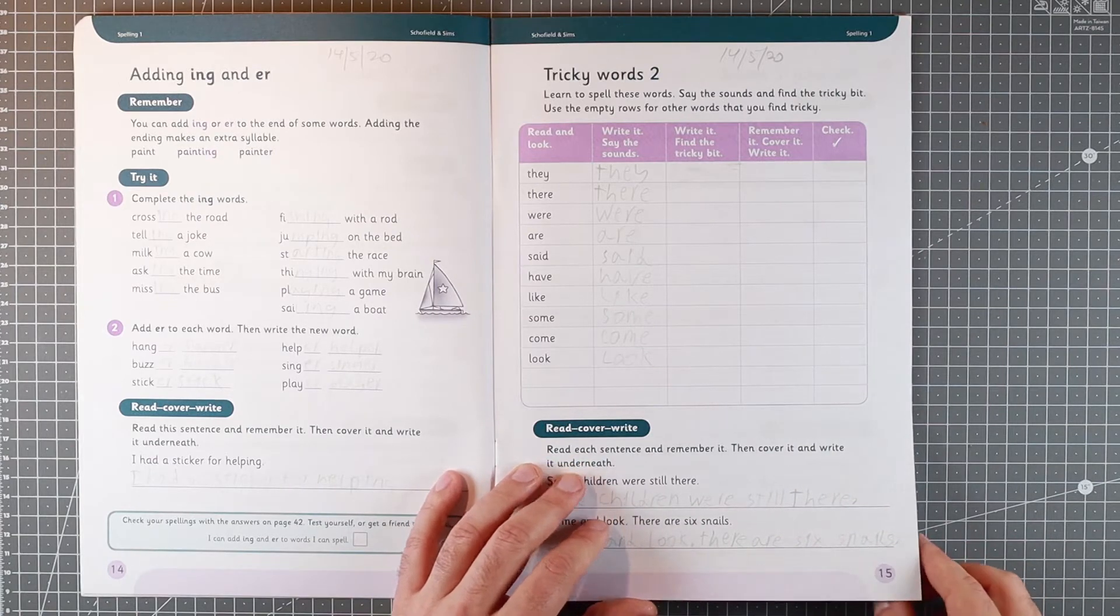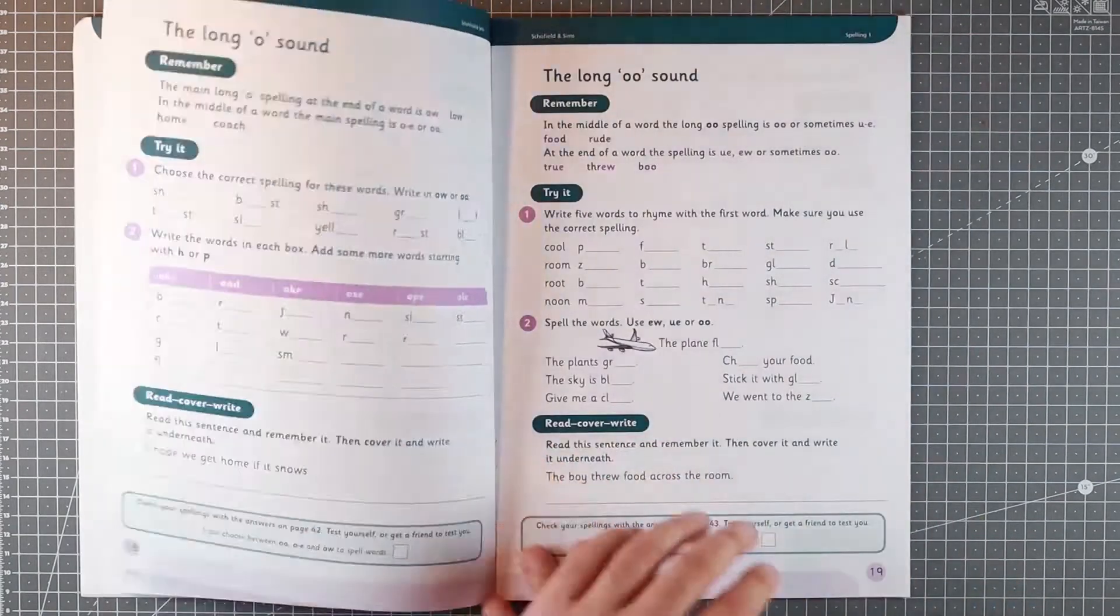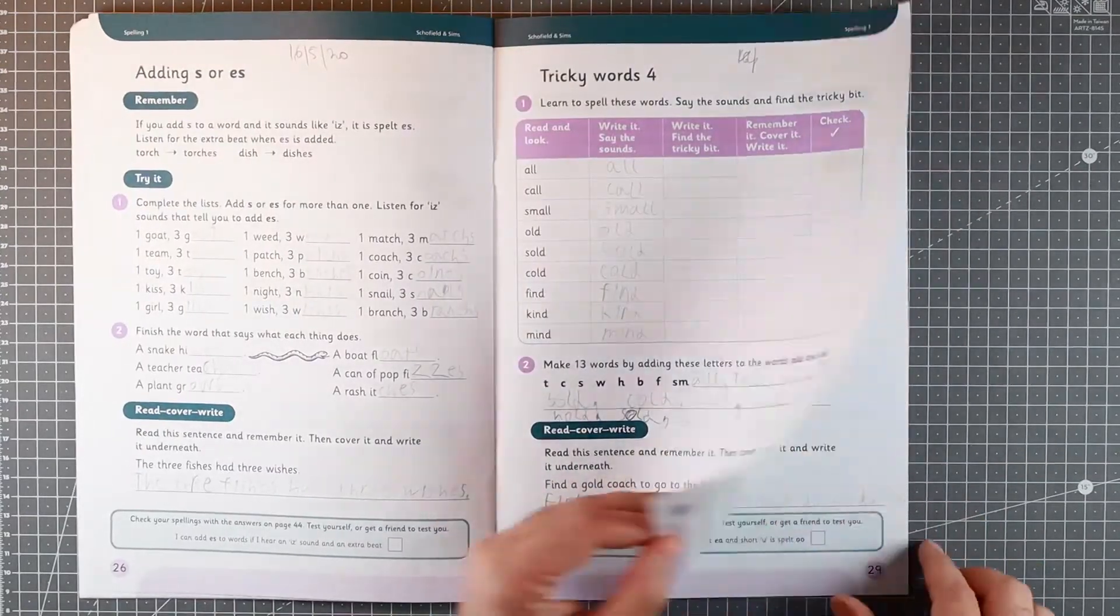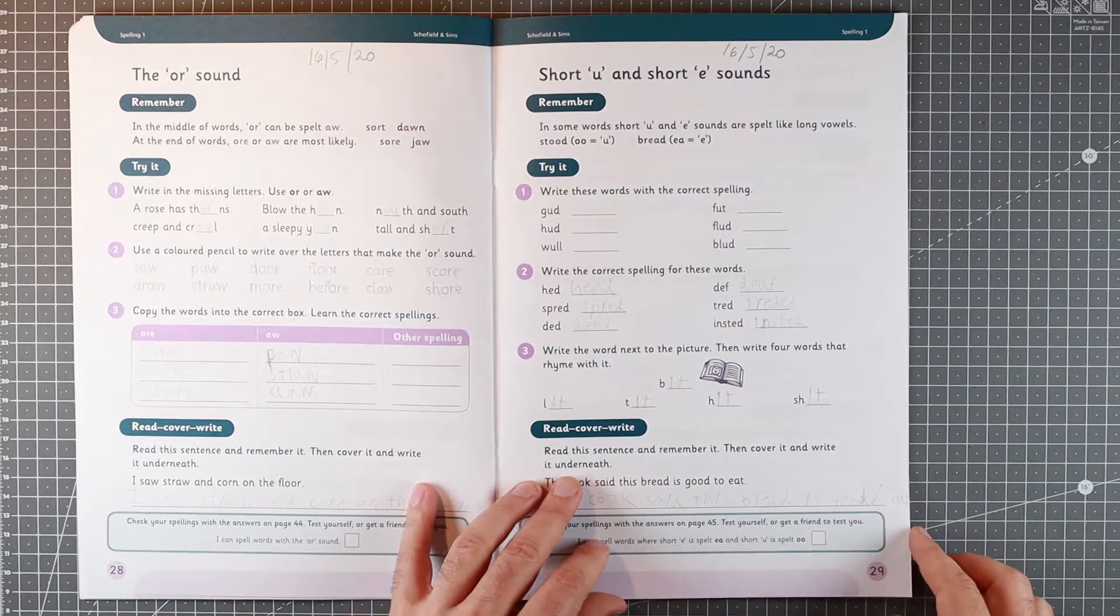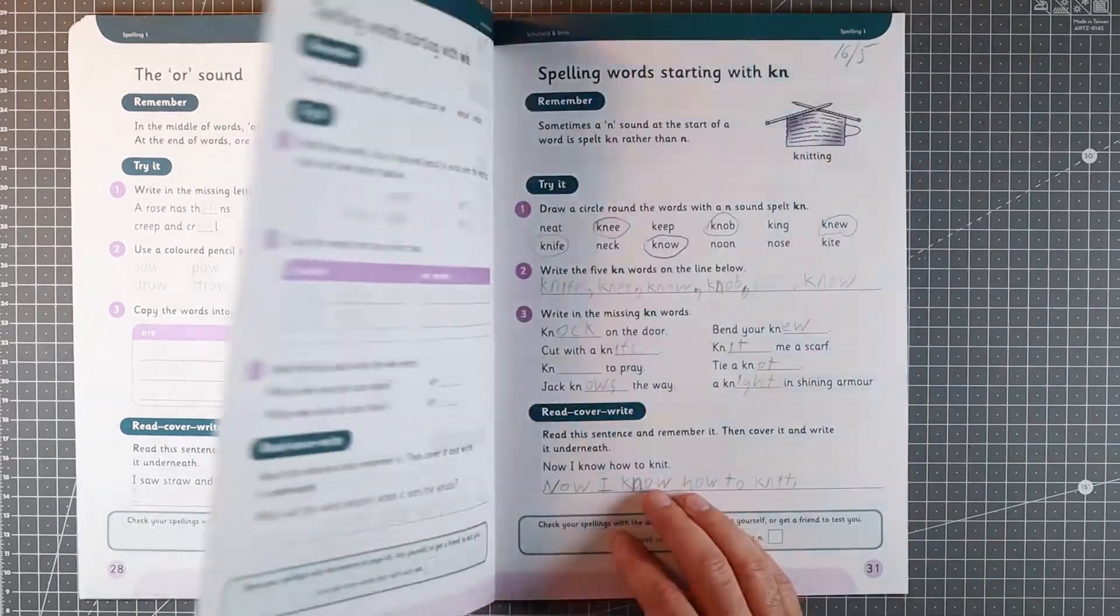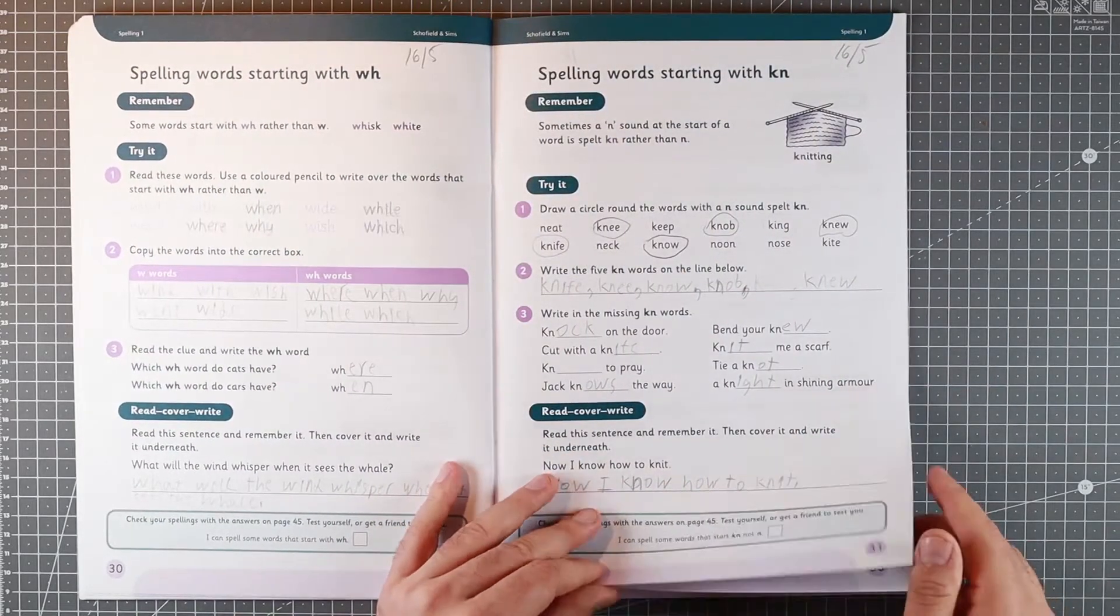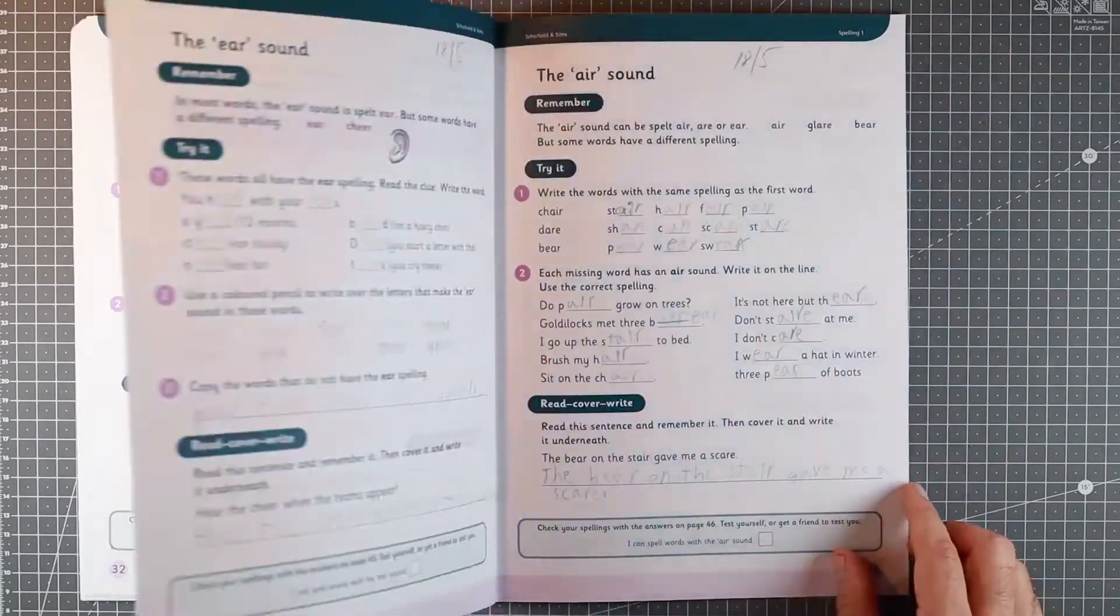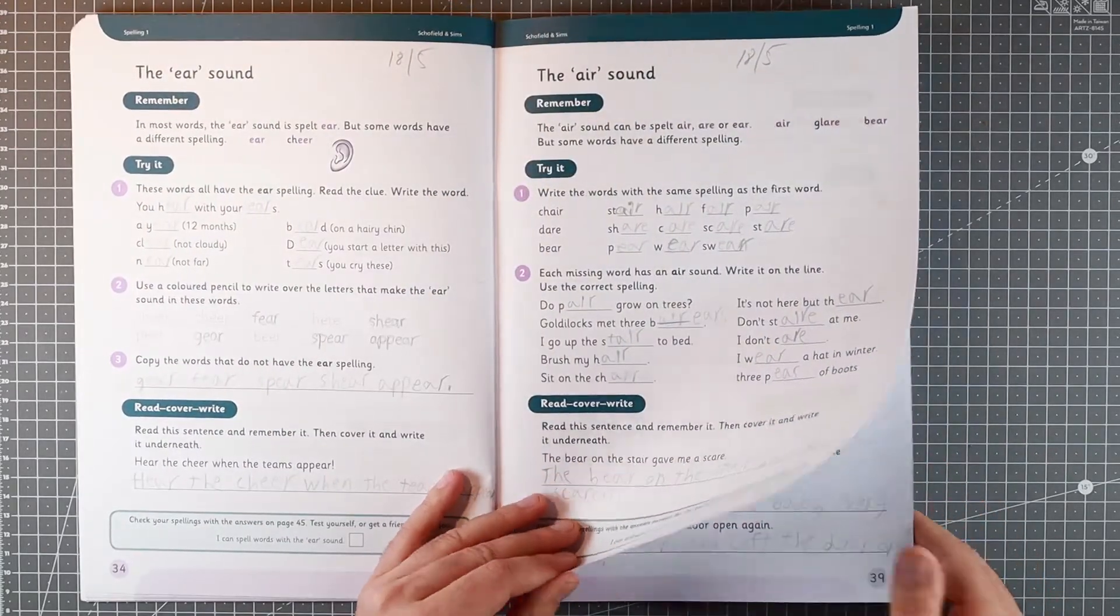End of each section, there's a little table for revision. And it goes on and on in a similar format. Not much in terms of graphics or pictures. It's quite plain, but that might be a good thing—gets them focusing on the spelling rather than anything else.